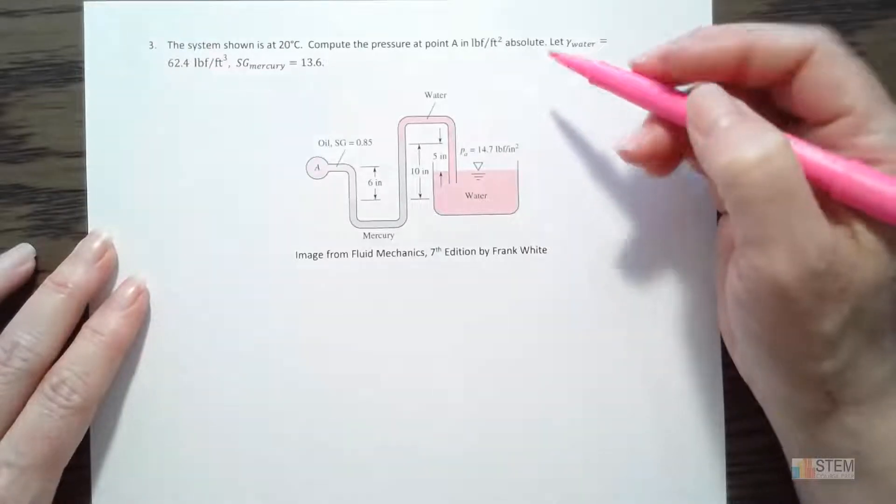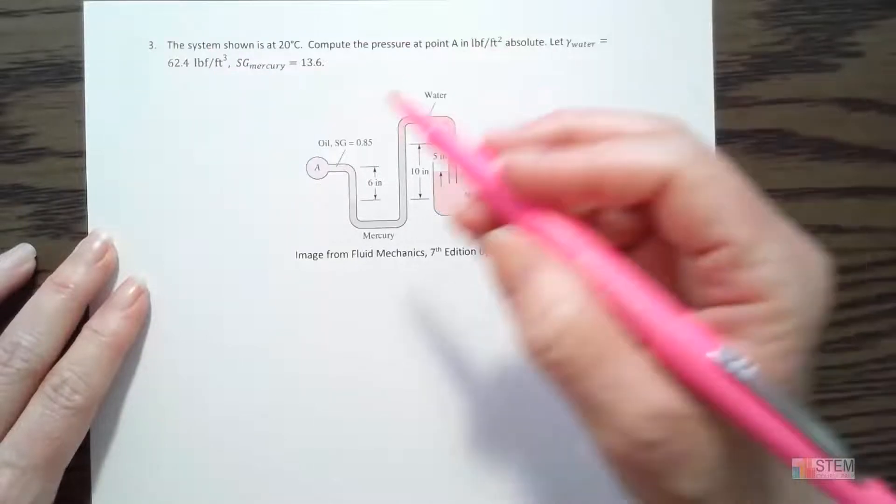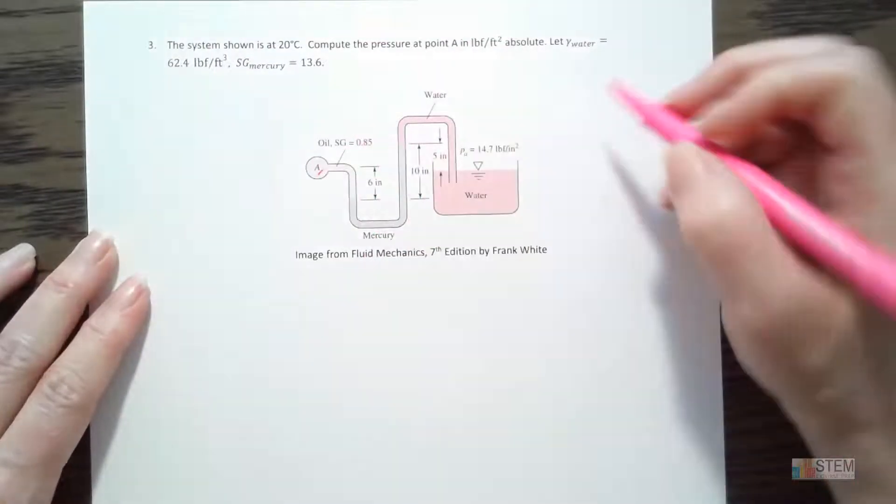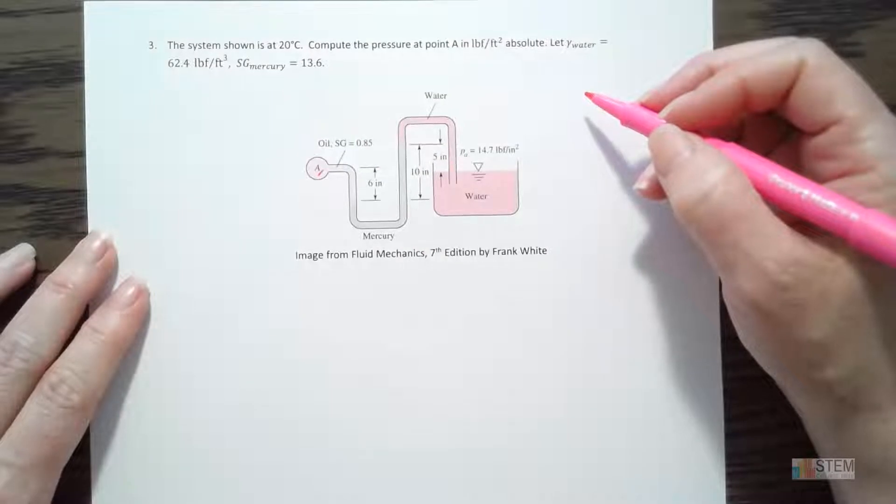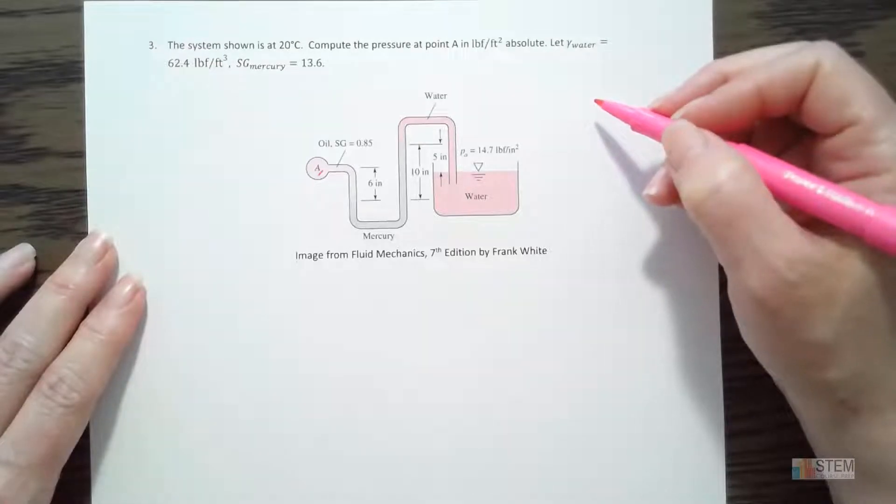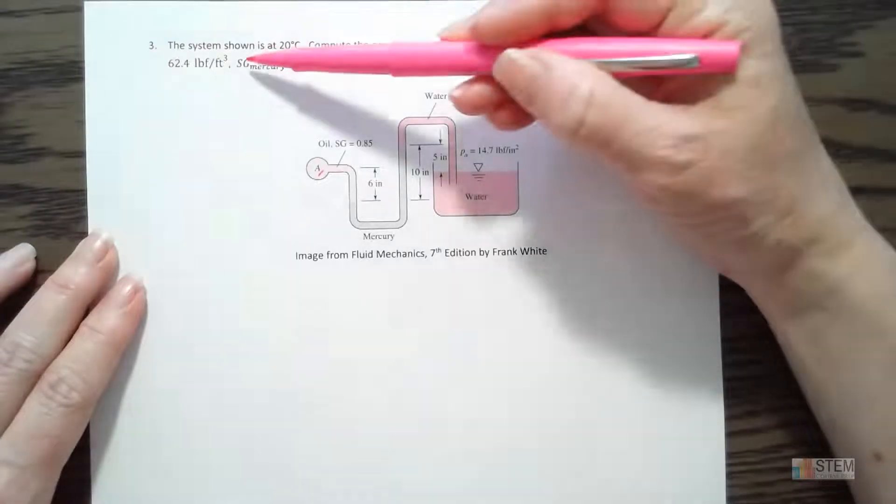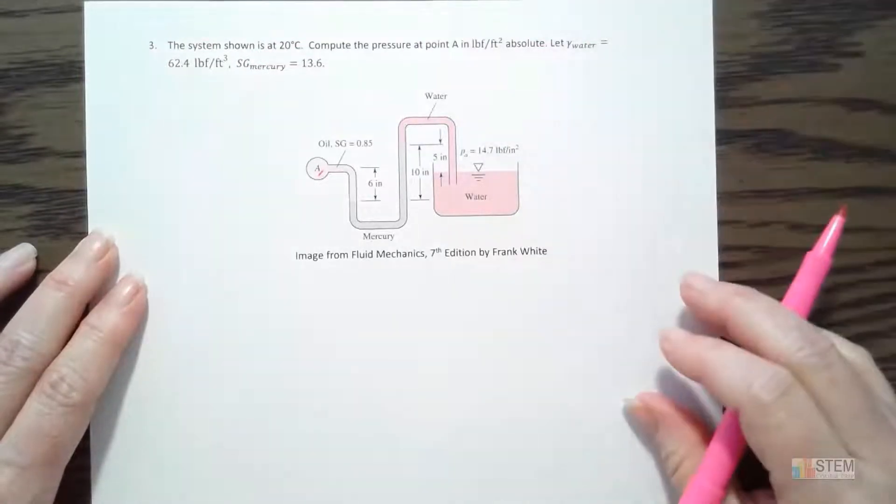So it tells us the system is at a temperature of 20 degrees Celsius, and we want to compute the pressure at point A, which is right here, in pounds per square foot absolute. Alright, so it wants absolute pressure, not gauge pressure, so keep that in mind. We're also given gamma for water, 62.4, and then specific gravity of mercury is 13.6.